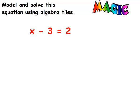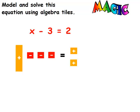Here's my first problem — model and solve this equation using algebra tiles. I put the variable with 3 negatives equals 2 positives. There's my equation. Now I need to isolate the variable. I need to get rid of those 3 negatives. I'm going to add 3 positives to make them zero pairs. But remember, whatever you do to one side of the equation, you have to do to the other. So I have to add 3 to both sides of the equation.